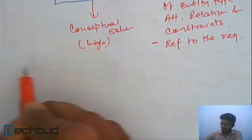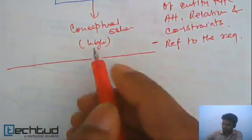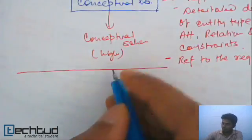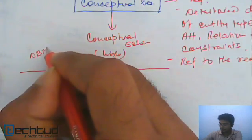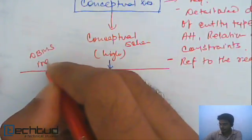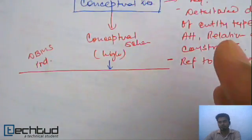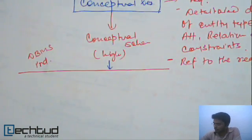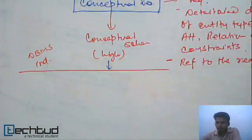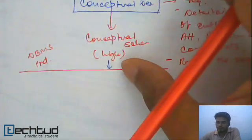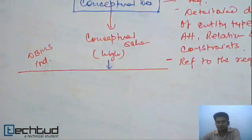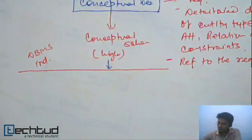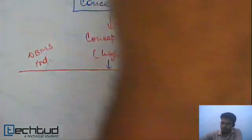Up to this step, everything was database-independent — DBMS independent. We don't care which system we are going to use, whether Oracle, MySQL, DB2, or MS SQL. Whatever we are going to use, up to this step it was independent of the database management system. Now what we are going to do is dependent on the system we are using.